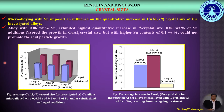Alloys with 0.06 weight percent of tin exhibited the highest quantitative increase in theta crystal size as revealed in this figure. Additions of 0.06 weight percent tin favored growth in theta crystal size, but higher tin content of 0.1 weight percent could not promote the said particle growth, as revealed in this figure.